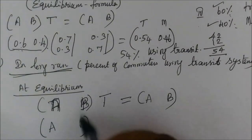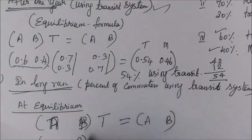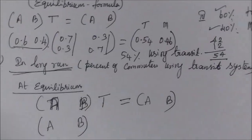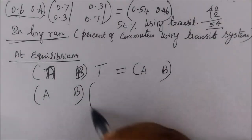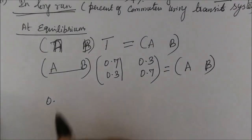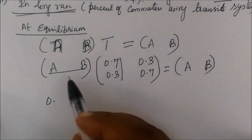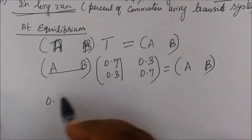This stage is after one year, but this stage is the long run. We choose this value — we usually choose the first row for the long run calculation.